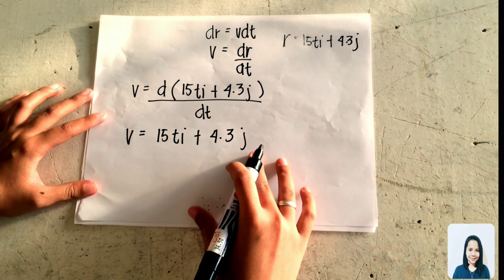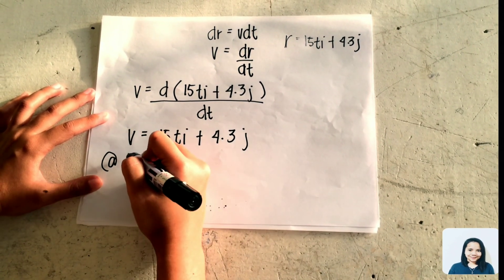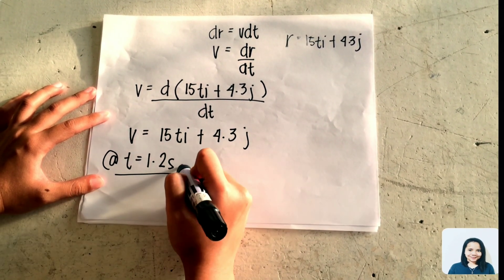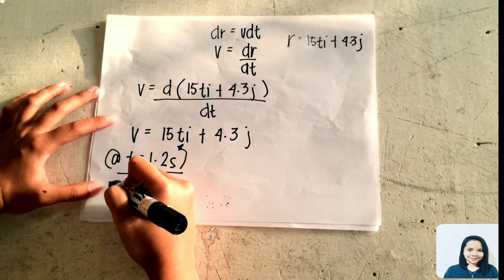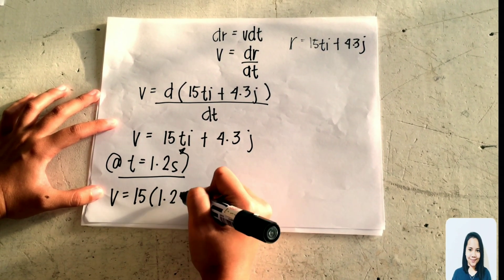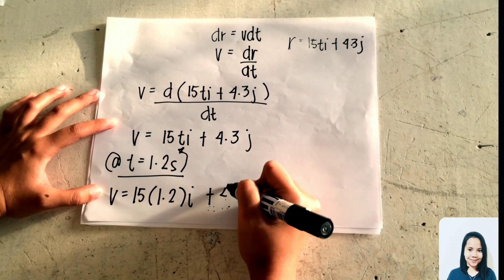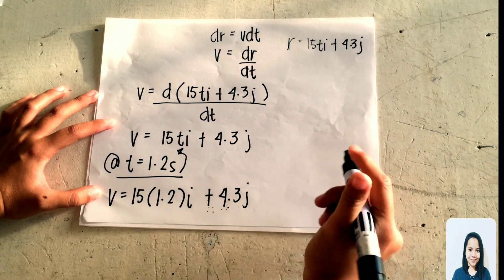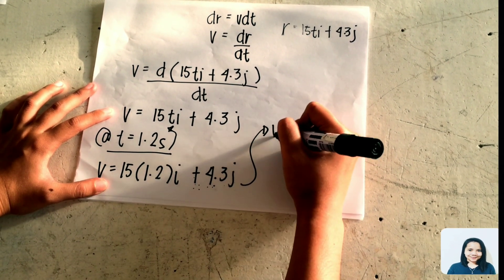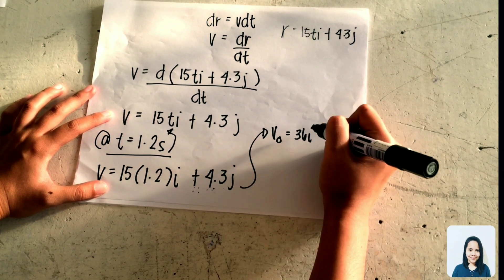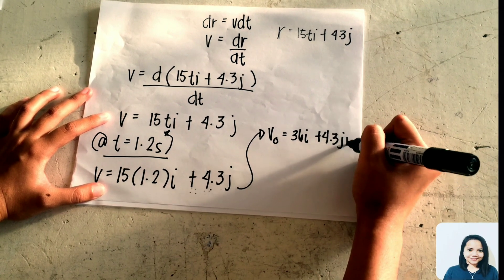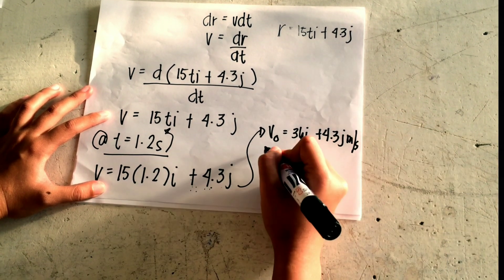Pag ganito na yung form mo, pwede mo na siyang i-derive. Ang makukuha mong sagot ay 15 i plus 4.3 j. Since given yung time mo na 1.2 seconds, pwede mo na i-substitute ito. So 15 times 1.2 seconds plus 4.3 j. Makukuha mo na yung sagot ng initial velocity mo na 36 i plus 4.3 j meter per second. Yan na yung sagot.